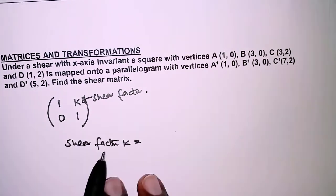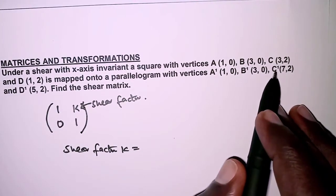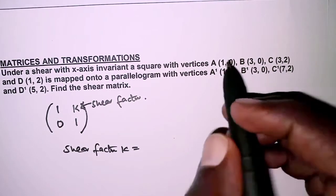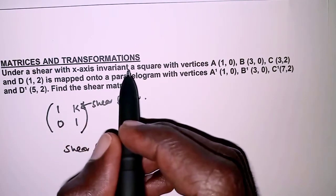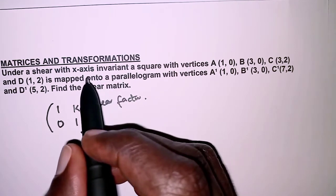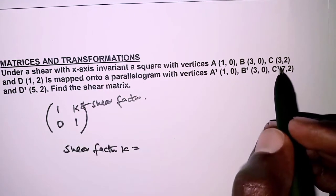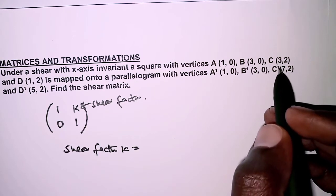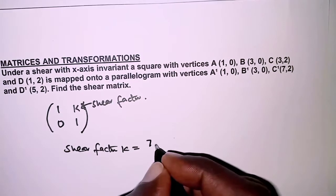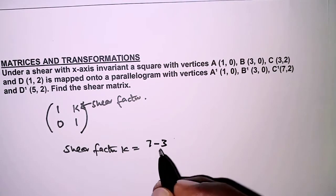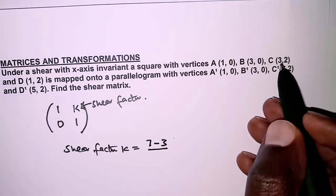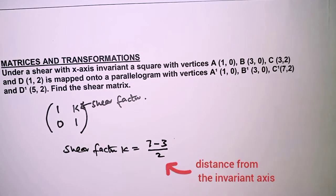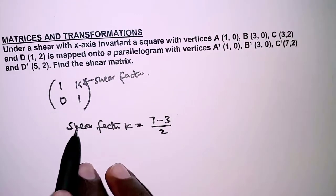We get the shear factor by looking at points C and C' — we can also use D and D'. For a shear with x-axis invariant, the shear happens parallel to the x-axis, meaning the x values change while y remains constant. So the displacement parallel to the x-axis is 7 minus 3, with no change in the y direction, giving us 2.